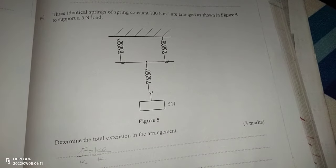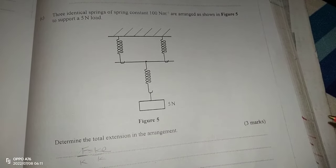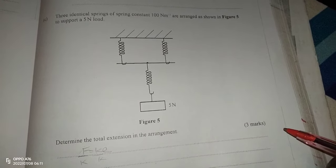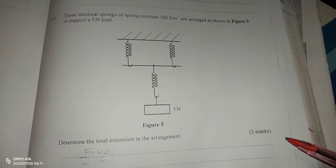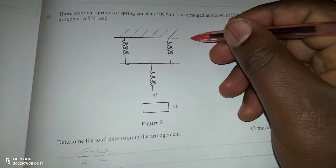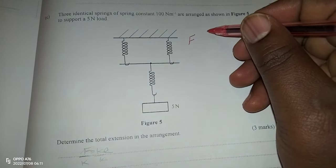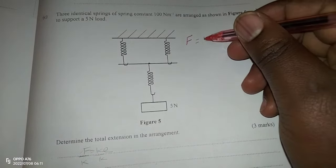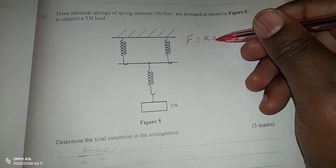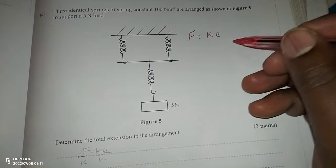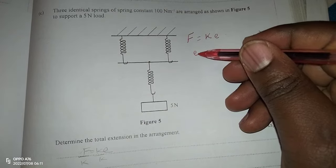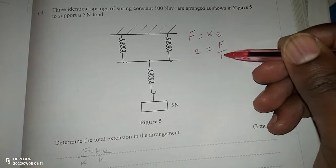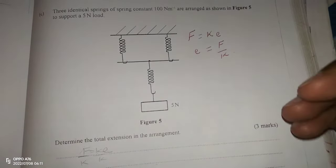Remember to subscribe to this channel and to share the link with your friends. What you should know is that force, according to Hooke's Law, is equal to spring constant multiplied by extension E. This tells us that extension E is equal to force divided by the spring constant.